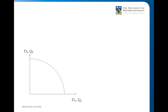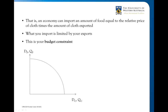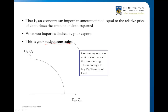Let's bring this into a production/consumption possibility situation. An economy can import an amount of food equal to the relative price of cloth times the amount exported — what you can import is limited by your exports. That constraint means you can expand your consumption possibilities, but only up to a limit. What we can construct here is a budget constraint: we're limited by how many imports we can buy because of how much we're earning from exports.